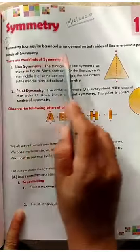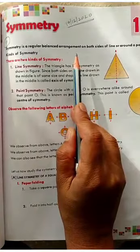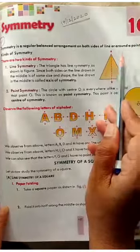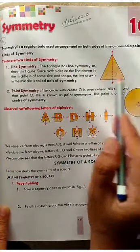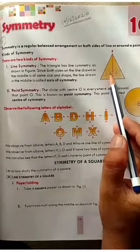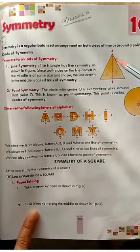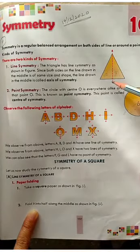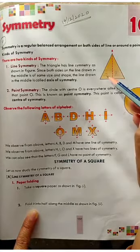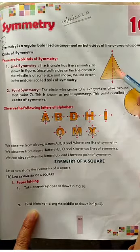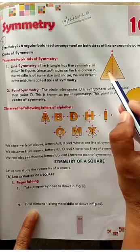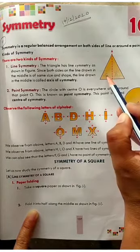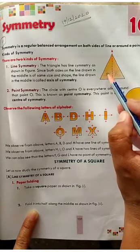Symmetry is a regular balanced arrangement on both sides of a line or around a point. To understand the term symmetry, just see this triangle here. You can see a dotted line used to separate and divide the triangle into two equal halves. On both sides of this imaginary dotted line, both sides are equal — means balanced. This is called symmetry.